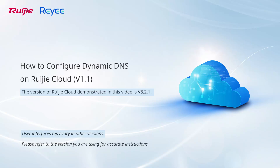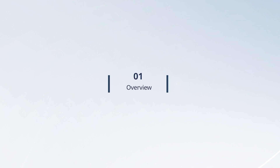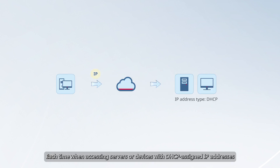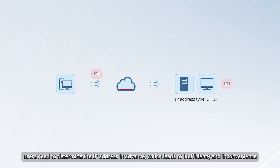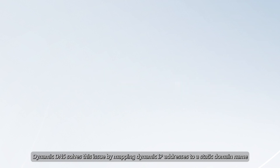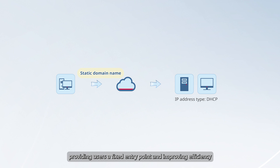This video demonstrates how to configure Dynamic DNS on Wegea Cloud. Each time when accessing servers or devices with DHCP assigned IP addresses, users need to determine the IP address in advance, which leads to inefficiency and inconvenience. Dynamic DNS solves this issue by mapping dynamic IP addresses to a static domain name, providing users a fixed entry point and improving efficiency.